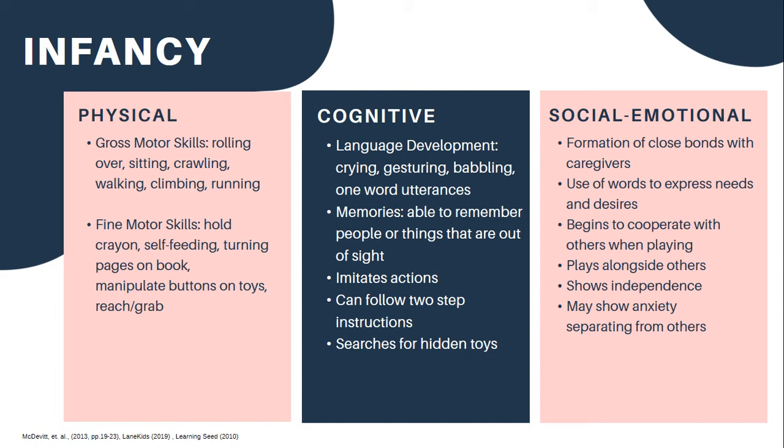Their language development begins by crying, gesturing and babbling. At about twelve to fourteen months, children will usually speak their first word. And by eighteen months, children will start using two-word sentences. Educators can foster language development by continuously initiating conversation, being good listeners and repeating words that children say. Strong bonds start to form with their caregiver. Trust in these relationships is key for emotional development. At about seven months, children might show strong attachments to their primary caregiver, recognized by crying when being separated from them.